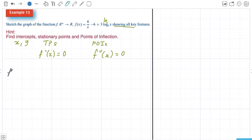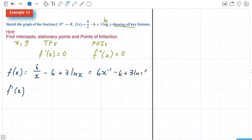So what we're going to do is find both of those things first and then I'm going to graph this with the CAS to help me get the basic shape right. First derivative: I'm going to write this with the negative index for the x. So f(x) = 6x^(-1) - 6 + 3ln(x). The derivative is -6x^(-2) + 3x^(-1).